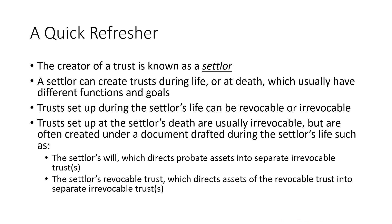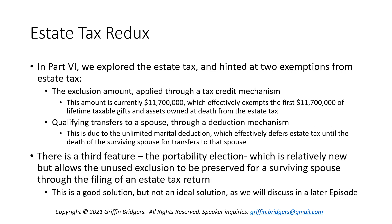Today we're going to start by looking at one of the most common forms of trusts set up at the settlor's death. In part six, we explored the estate tax, and as a 30,000-foot view, we can break down that there are two big exemptions to the estate tax. One is the exclusion amount, which is currently $11.7 million, but could go down based on the sunset of the Tax Cuts and Jobs Act in 2026, or due to legislative action that might happen sooner. There's another exemption where qualifying transfers to a spouse are exempt from the estate tax through a deduction mechanism known as the marital deduction, and that amount is unlimited.